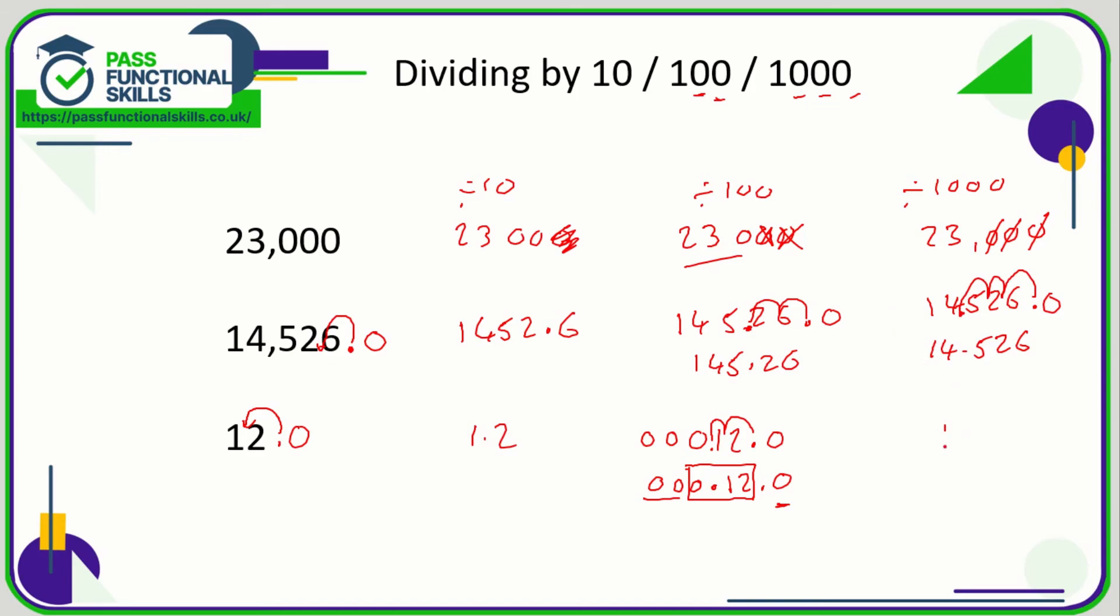And 12 divided by 1,000: again, it's quite a tricky one. We could write it as 12.0, but I'm going to put some zeros in front just so that I can see where the decimal point will drop. Again, it's going to move three positions: one, two, three.